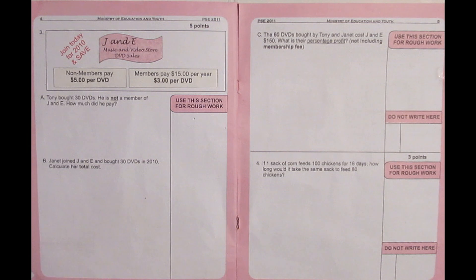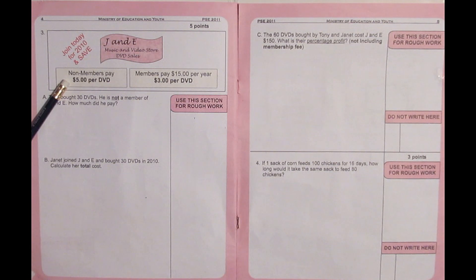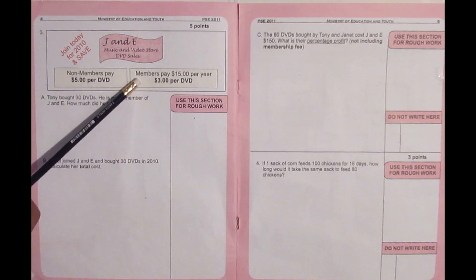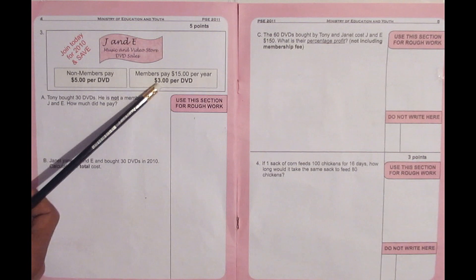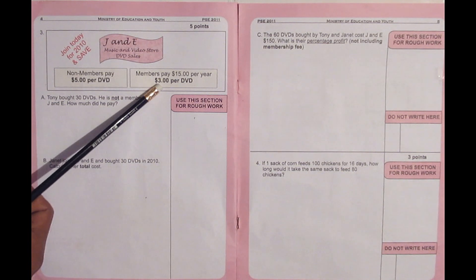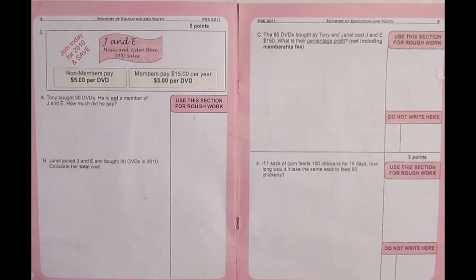In today's lesson you have a company called G&E Music and Video Store DVD Sales. The problem says if you're a non-member of G&E you will pay $5 per DVD. If you're a member of G&E, you pay $15 per year to become a member, and every DVD you purchase is $3, compared to a non-member who pays $5 per DVD.